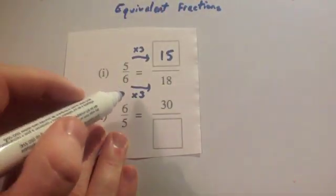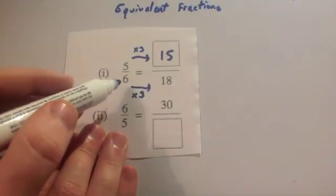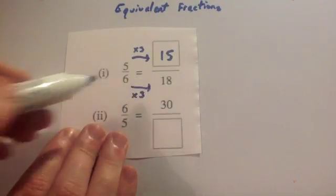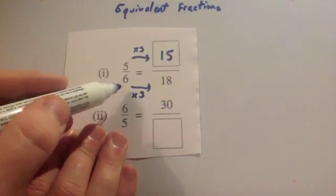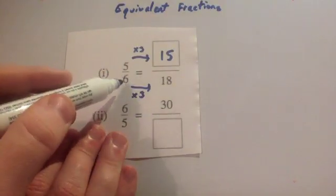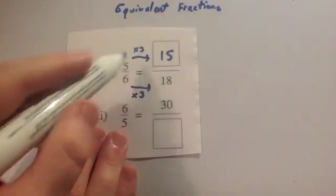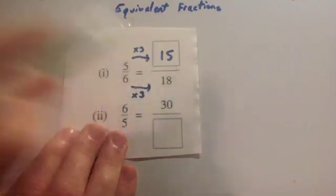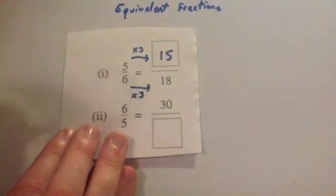To work out the fact that you're timesing by 3, you either know your times tables—6 times 3 is 18—or do 18 divided by 6 and you get 3, so it would tell you what you would need to times by. So if you times the bottom by 3, you must times the top by 3 and 5 times 3 is 15.